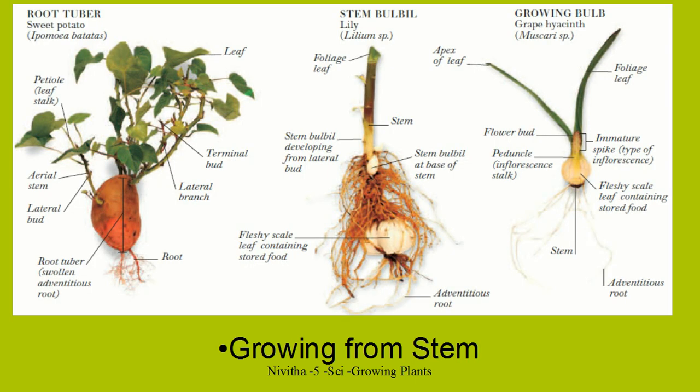How do plants reproduce? Plants reproduce from the seed, but there are other ways also. We can grow a plant from a stem. For example, a potato has pores — you would have seen a potato which has small pores.